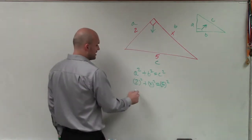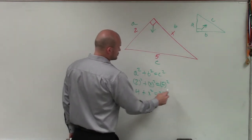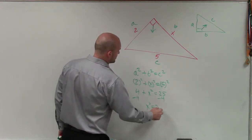Now I just need to evaluate. So I have 4 plus x squared equals 25. Then I subtract the 4, so x squared equals 21.